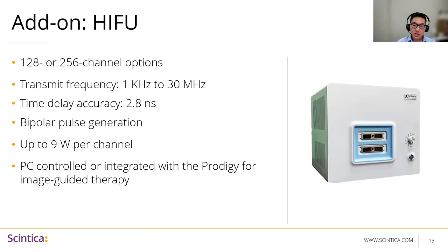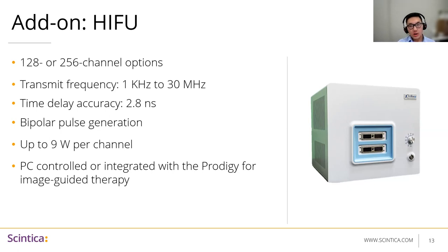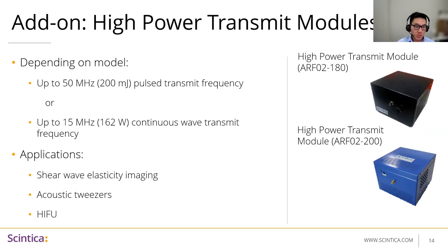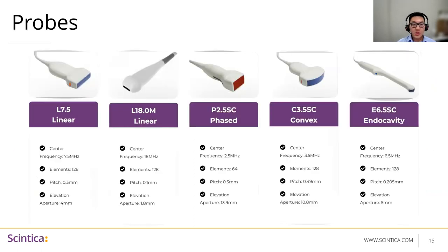The HIFU add-on unit can be used either by itself with any PC you provide, or incorporated with the Prodigy using the software interface to synchronize them together. It has a similar transmit frequency range of 1 kilohertz to 30 megahertz, 2.8 nanosecond time delay accuracy, bipolar pulse generation, and provides up to 9 watts per channel — and this can go higher for pulse applications. The two high-power transmit modules can be used for shear wave elasticity imaging, acoustic tweezers, and HIFU, providing up to 50 megahertz pulsed transmit at 200 millijoules per pulse, or 15 megahertz in continuous wave at 262 watts.